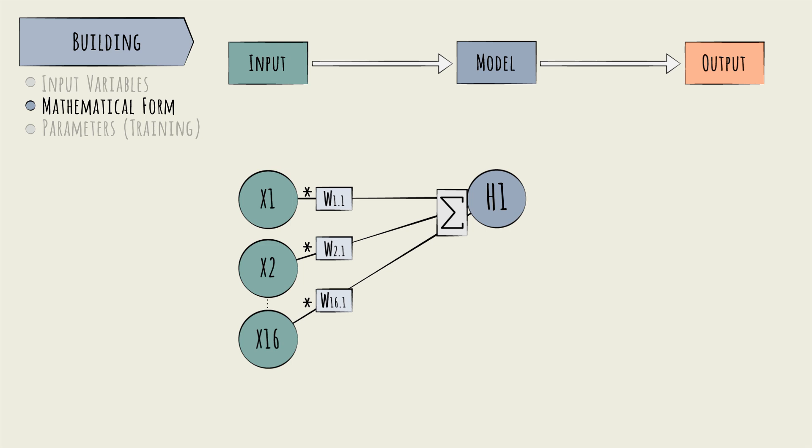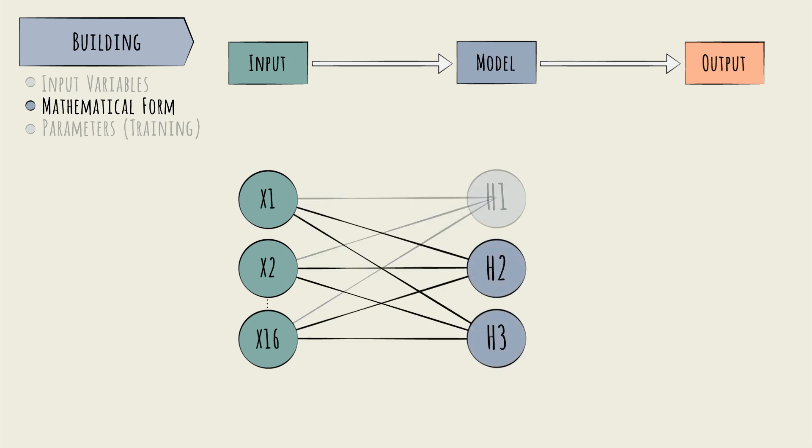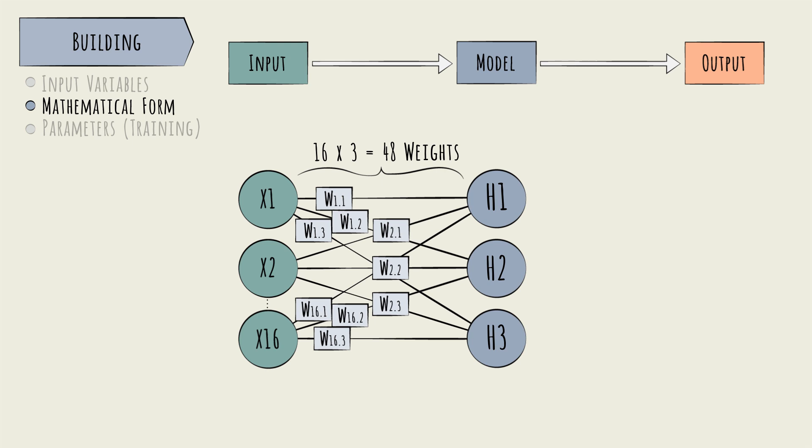In our case, though, here's how the weighted sum works. H1 is calculated by multiplying each x value against its corresponding weight and adding it all up. Basically, a sum product of all the x's and weights. H2 and H3 are calculated in the same way. Each node on this hidden layer introduces another 16 weights. So now we have a total of 48 weights between the first two layers alone.